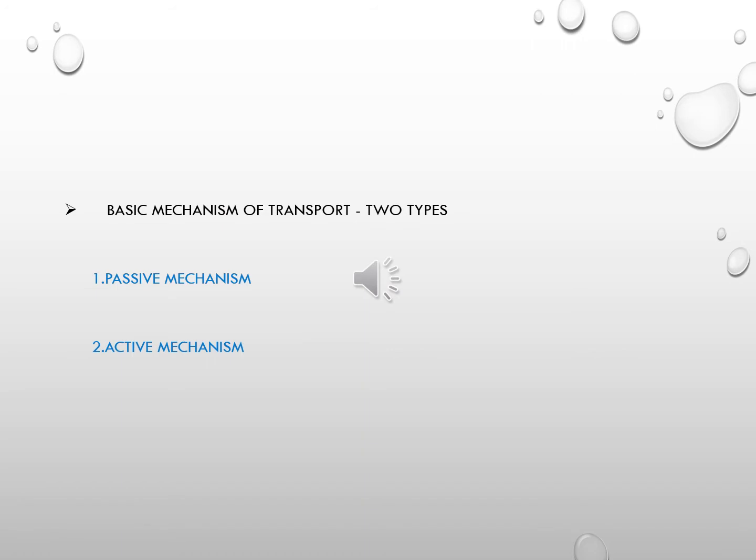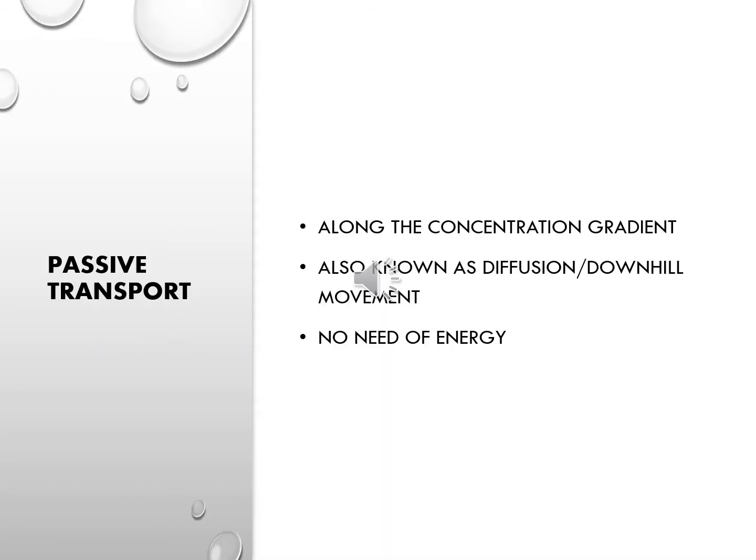Cell transport occurs basically by means of two mechanisms: passive mechanism and active mechanism. Passive transport is a process where substances move from a region of higher concentration to a region of lower concentration — that is, substances move down the concentration gradient or electrical gradient without any expenditure of energy. It is also known as diffusion or downhill movement. No energy is required for the movement of substances.